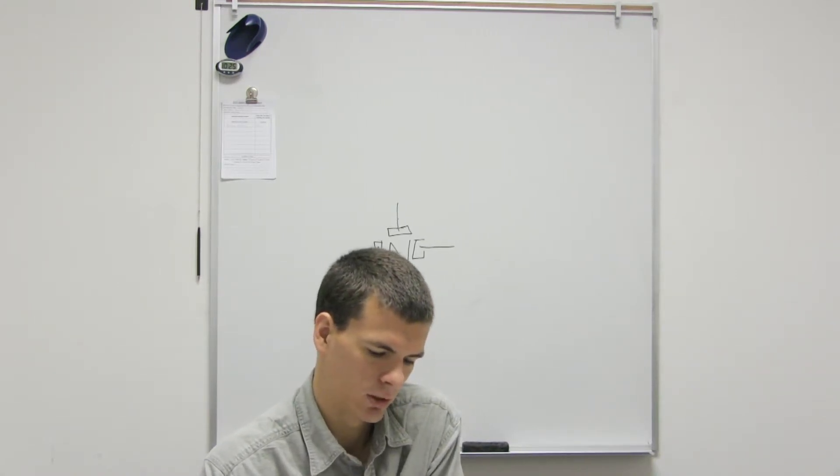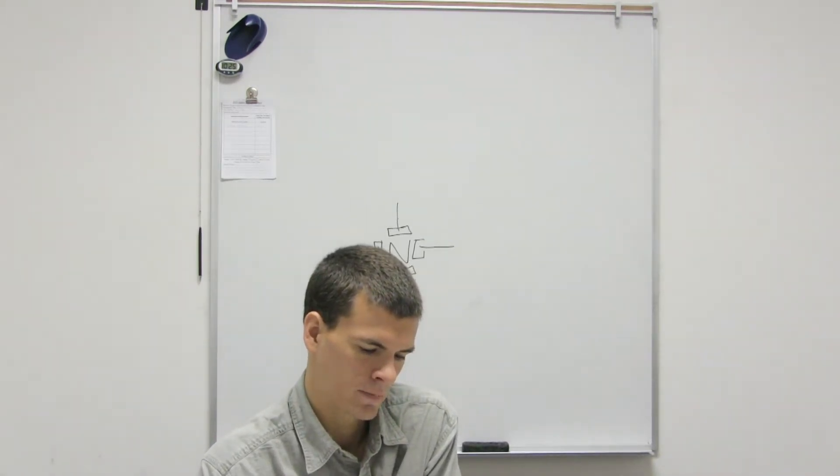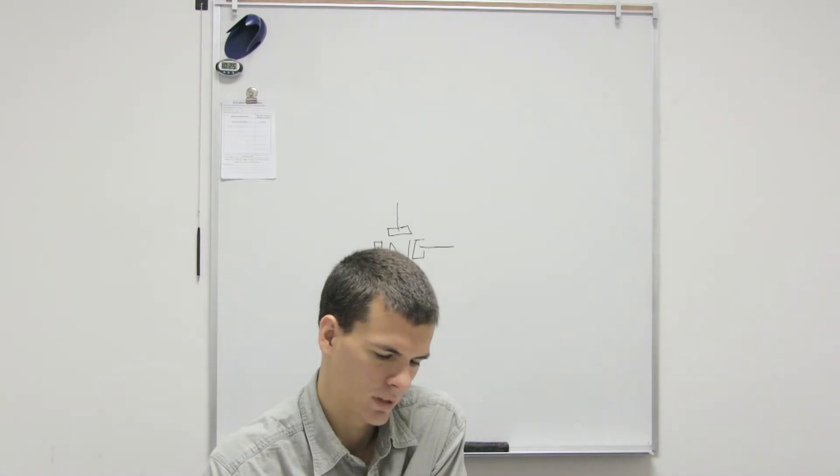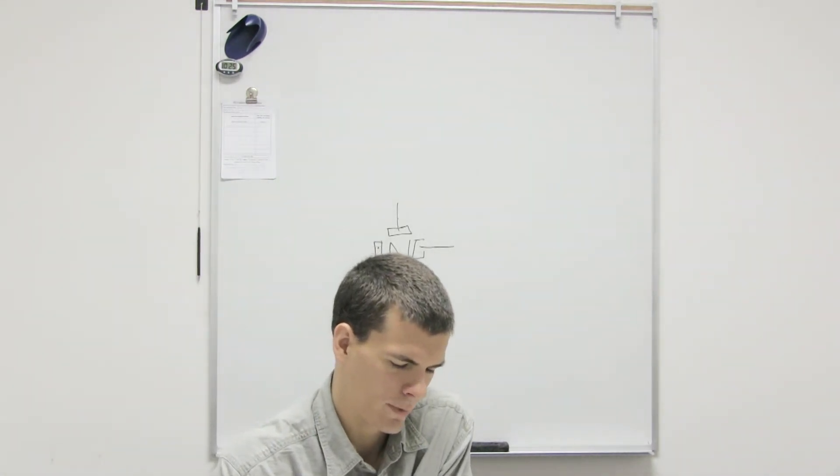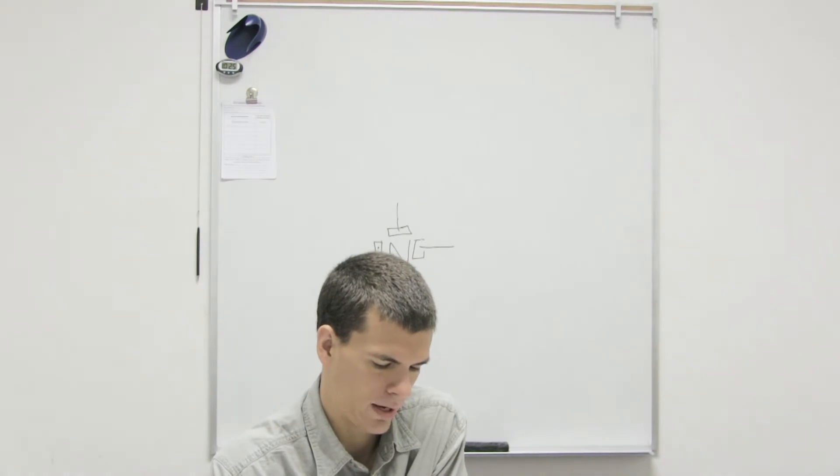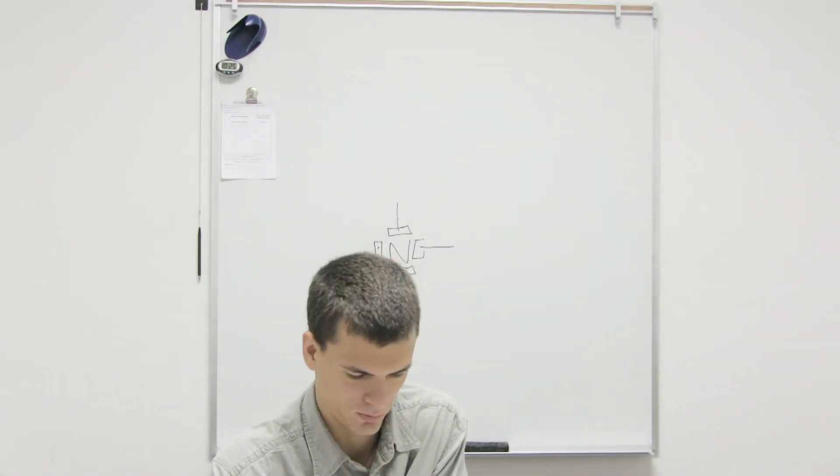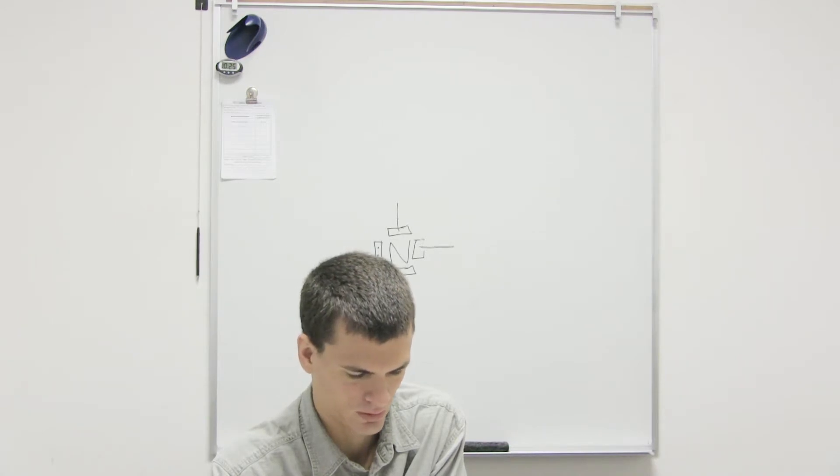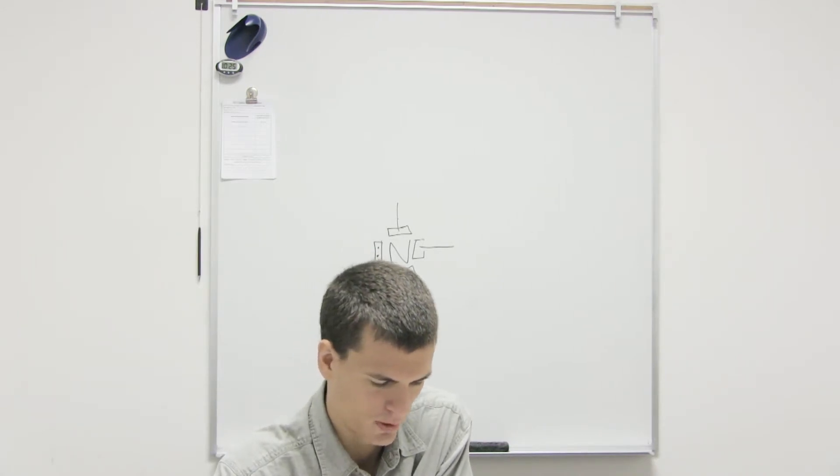Yeah, you can't really tell just looking at the Lewis structure, because you have to matter, lone pairs don't actually occupy, like when you look at this, what is this, I don't know, ball and stick or whatever. Lone pairs won't show up.